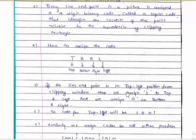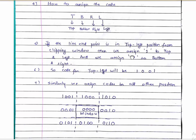In this format we are going to assign the code. If the line endpoint is in the top-left position from the clipping window, we assign the code 1001 — one for top, one for left, and zero for bottom and right because it's not there. So we assign 1001 similarly to all positions. For example, the top-middle one: it's in the top position so 1, not in the bottom so 0, not in the right so 0, not in the left so 0.